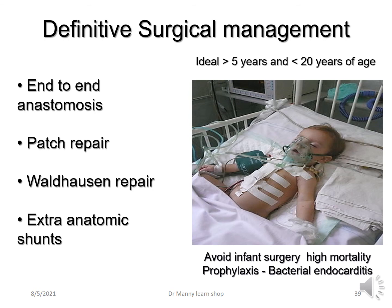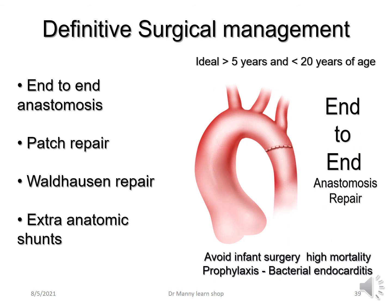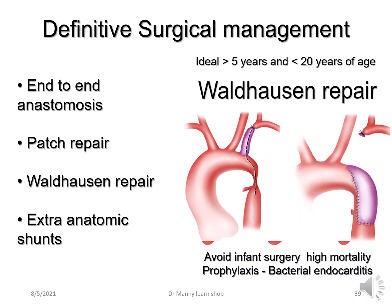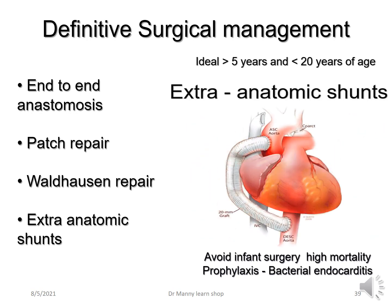The definitive surgical management, if required, is ideally at greater than five years of age and certainly less than 20 years, as untreated coarctation leads to complications. It is typically avoided in infant surgery due to high mortality, and bacterial endocarditis prophylaxis is required. Surgical options include end-to-end anastomosis, patch repair, the Waldhausen repair — which utilizes the left subclavian artery — and extra-anatomic Dacron shunts to bypass the obstruction.